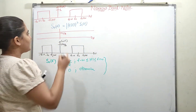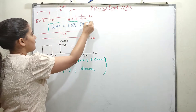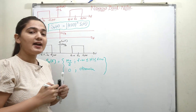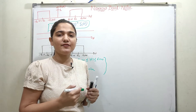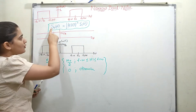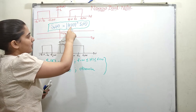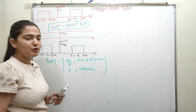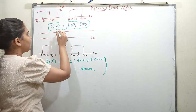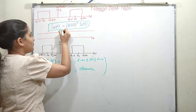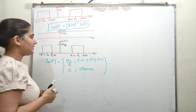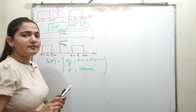The output power spectral density can be found using this important property: S_output(F) = |H(F)|² × S_input(F). I have already discussed this property of the power spectral density in one of my previous videos. This was H(F), this is S_input(F), and multiplying both gives S_output(F).